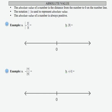In this example, we're going to look at the concept of absolute value. The absolute value of a number is the distance that number is from zero on the number line. The notation with these two vertical bars is used to represent absolute value, and the absolute value of a number is always positive.